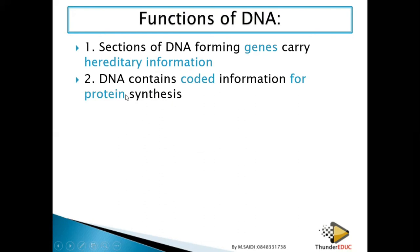Number two: DNA consists of coded information for protein synthesis. Most of our body is made up of proteins — hormones, enzymes — which bring about the normal functioning of our body. It is DNA that codes for those proteins. We will look at protein synthesis in upcoming lessons, but those are the two main functions of DNA in our body.